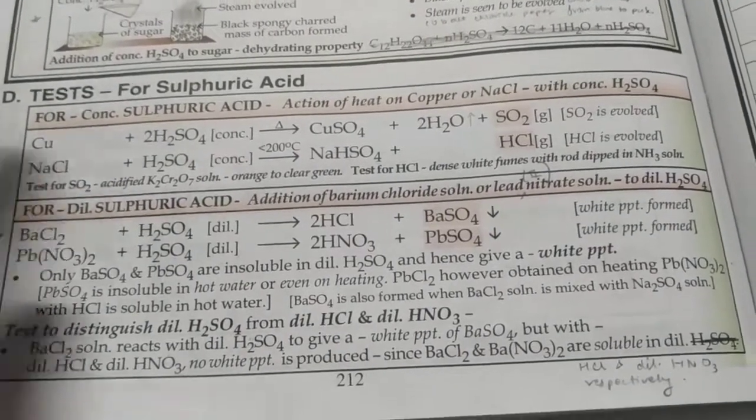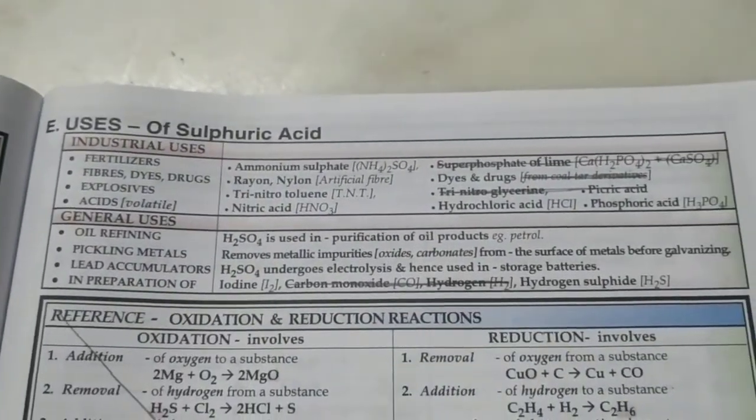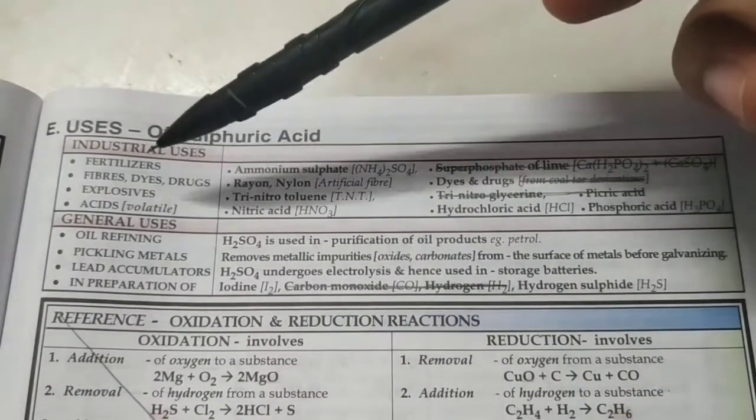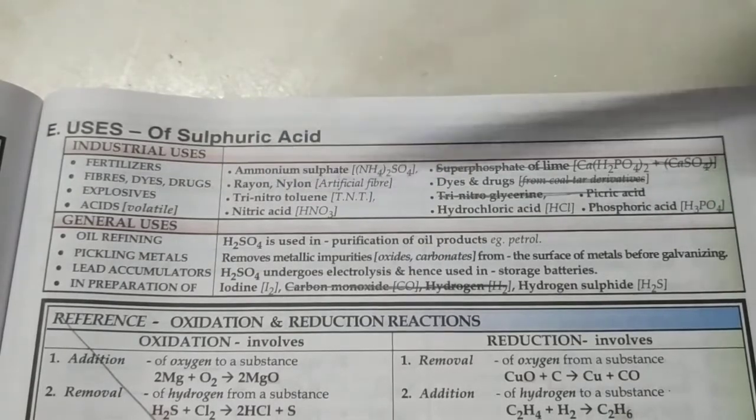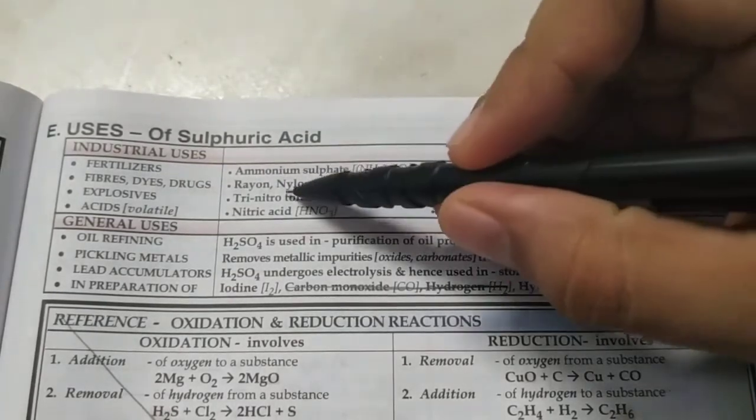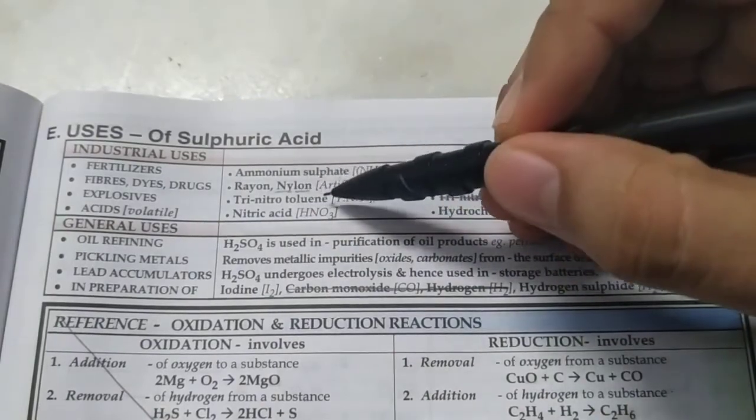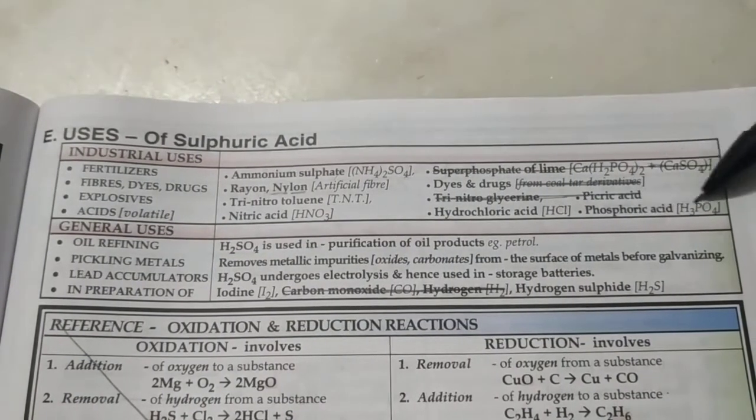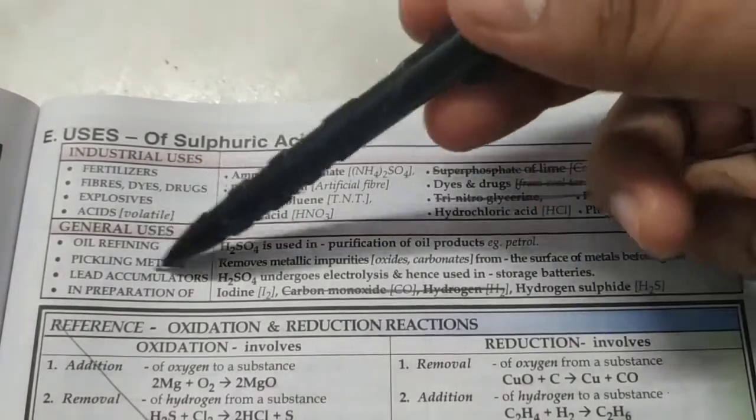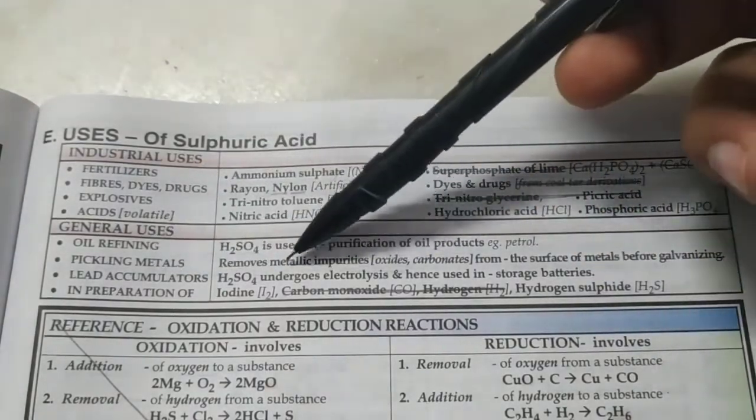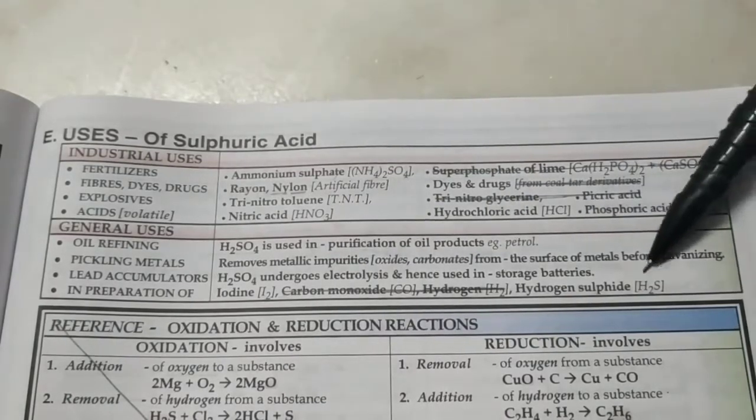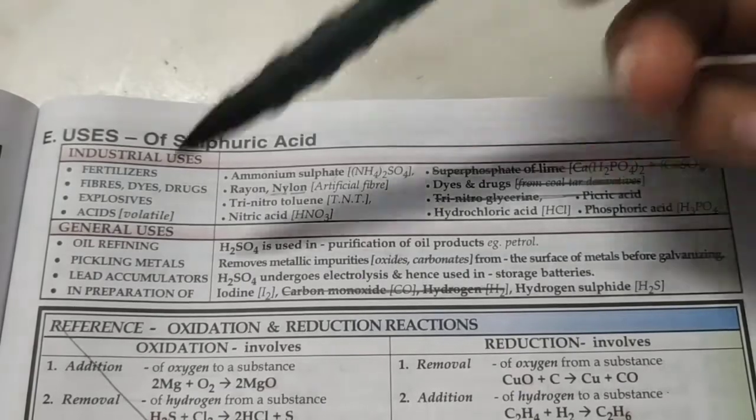Finally, the uses of sulfuric acid. It has many uses. Fertilizers, fibers, dyes, drugs. Rayon and nylon. Nylon was invented in New York and London simultaneously, that is why it is called nylon. Explosives like TNT. Acids. Also for forming phosphoric acid. Oil refining. Pickling of metals: we should remove the impurities on the surface of the metal before galvanizing it. It is used in car batteries and also in preparation of certain substances.